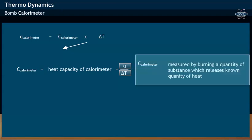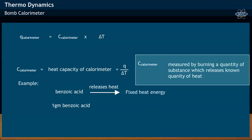The heat capacity of the calorimeter, C_calorimeter, is measured by burning a known quantity of reaction sample, which is generally benzoic acid. Benzoic acid releases a known amount of heat energy. For example, one gram of benzoic acid releases nearly 27 kilojoules per mole, which is Q.